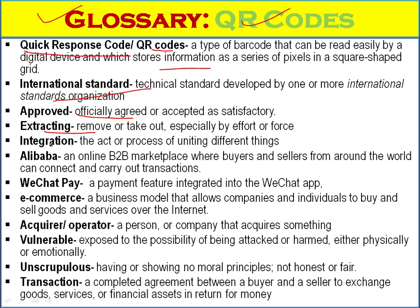Extracting: to remove or take out. Integrations: using different things together. Alibaba: an online B2B marketplace where buyers and sellers from all over the world can connect and carry out transactions. WeChat Pay: a payment feature integrated into the WeChat application. E-commerce: a business model. Acquirer or operator: a person or company that acquires something. Vulnerable: exposed to the possibility of being attacked or harmed.